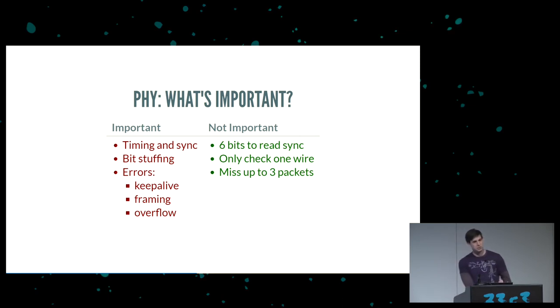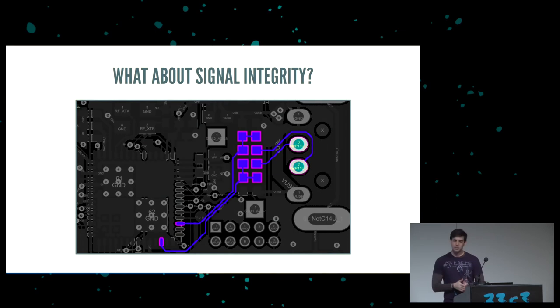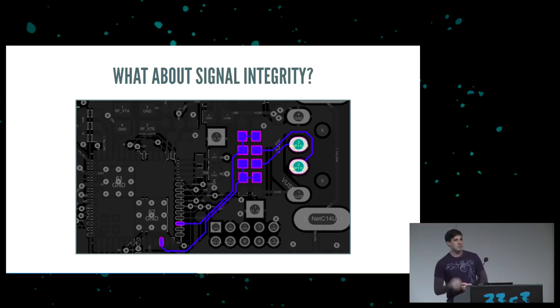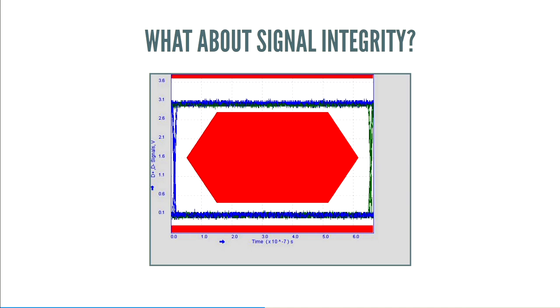One other feature: the USB spec allows you to miss up to three packets, so if we miss one the host will just try again. Regarding signal integrity — and analog people may want to avert their eyes — my USB signal pin traces are not a matched differential pair at all. Normally you'd want differential routing with matched lengths, but I didn't do that, and it turns out that's just fine. The eye diagram actually looks great — we avoid the red areas very well, even with the awful routing.